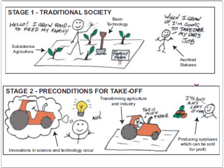Let's take a look briefly at Rostow's five stages of development. The first stage — the least developed stage — is the traditional society. At this stage of development, production is largely based around subsistence agriculture. Technology is very basic, and people are based in small communities with jobs passed on through the family line.